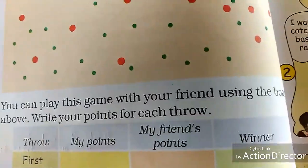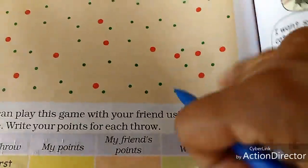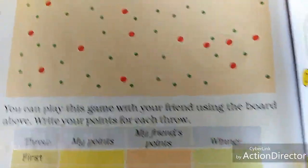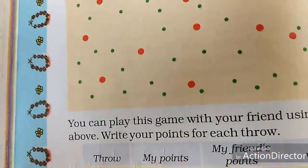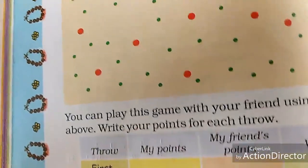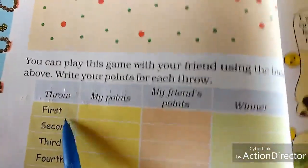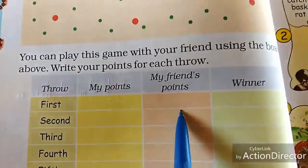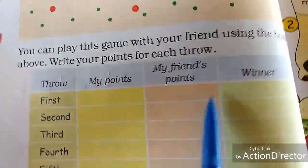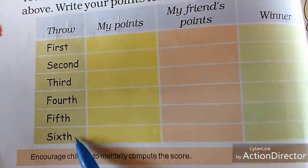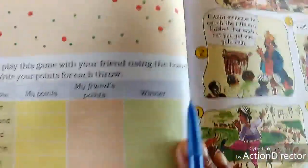Turn the next page. You can play this game with your friend using the board. Write your points for each throw. Take a bangle and throw it on the board. Write your points and your friend's points here, compare them, and tell who is the winner. Play up to 6 throws.